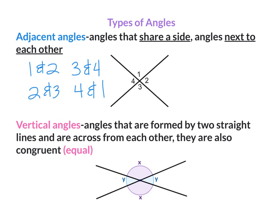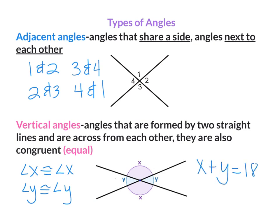Vertical Angles. These are angles that are formed by two straight lines and are across from each other. They are also congruent or equal. Angle X is congruent to angle X because they are across from each other, and angle Y is congruent to angle Y because they are across from each other. Angle X and angle Y form a straight line, so they are supplementary: angle X plus angle Y equals 180 degrees.